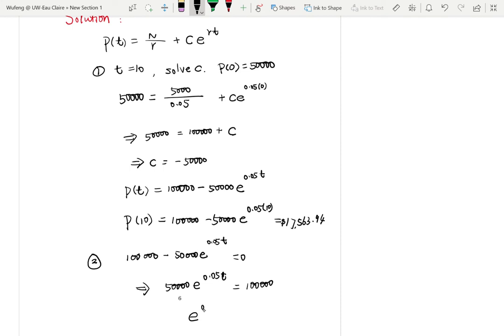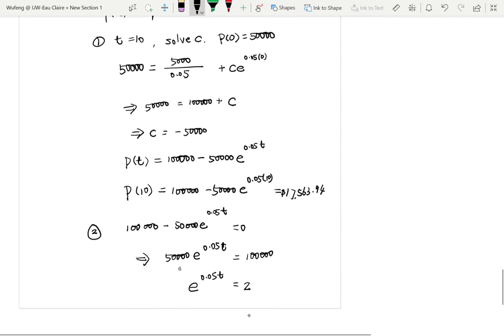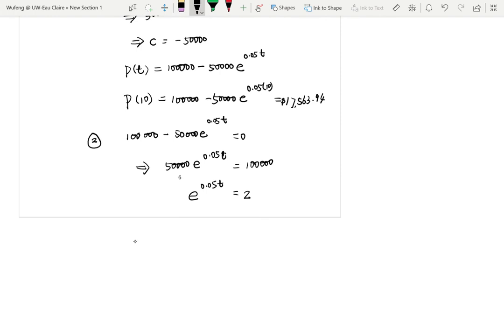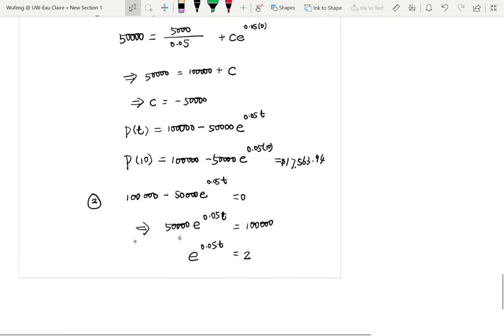Solve that: 50,000e^(0.05t) = 100,000, so e^(0.05t) = 2. Take natural log on both sides: 0.05t = ln(2). Therefore t = ln(2)/0.05, which gives t = 13.86 years.